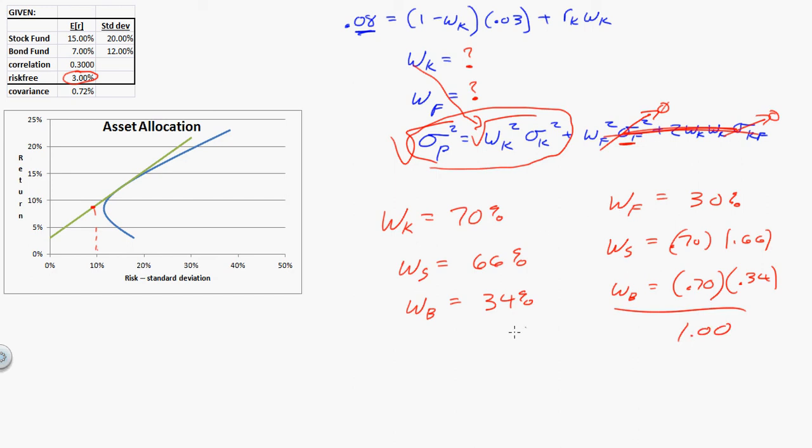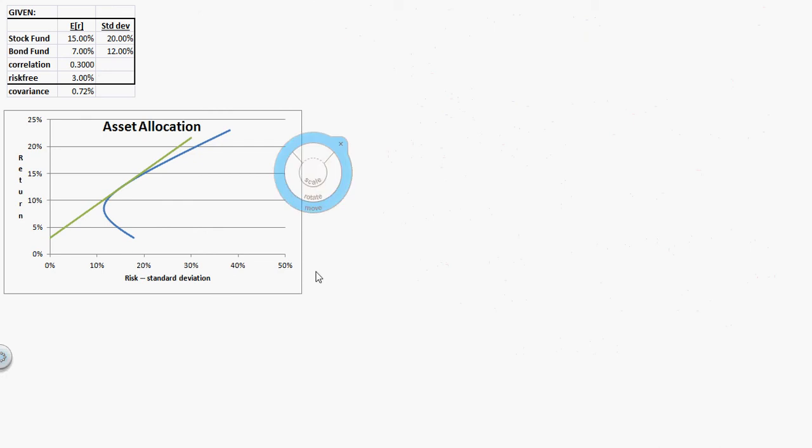The weight I would put in the risk-free in the T-bill would be 30%. The weight I would put in stocks would be 0.7 times 0.66. The weight I put in bonds would be 0.7 times 0.34. This should all add to 100%. So, now we can tell the client you have $20 million. I can tell you exactly how much to put in the T-bills, $6 million in the T-bills, and then I can tell you the exact amounts to put in the stock and the bond, tell you you get 8% return, tell you exactly what your variance is.